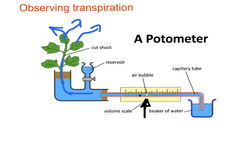As the air bubble moves along, you can see how transpiration is progressing. Eventually you reset the air bubble using the reservoir. As the water evaporates from the leaves, it pulls up more water from the potometer, the air bubble travels, and we can see how quickly transpiration is occurring by how rapidly that air bubble moves.